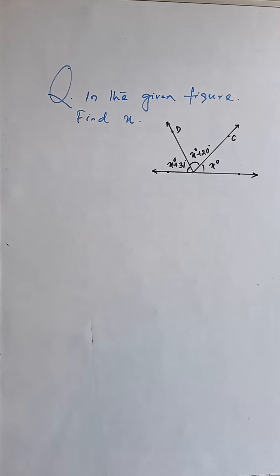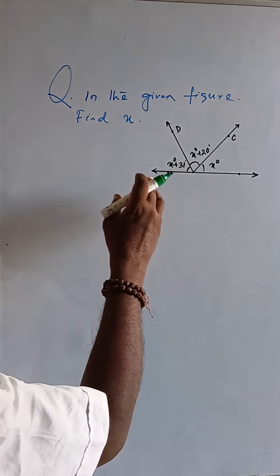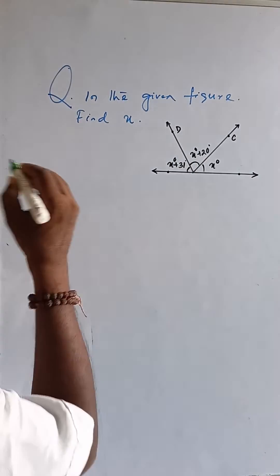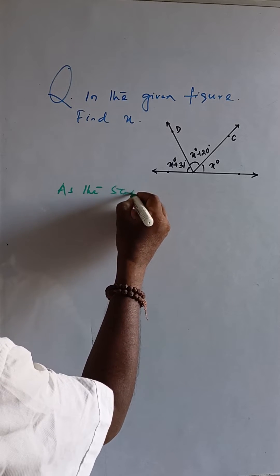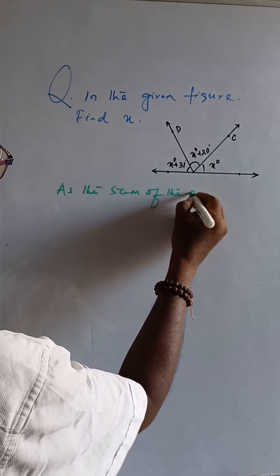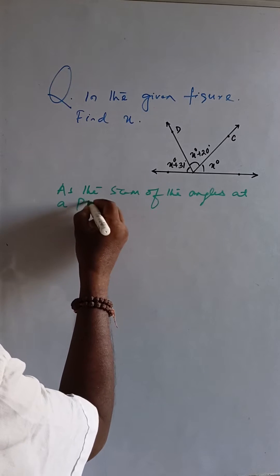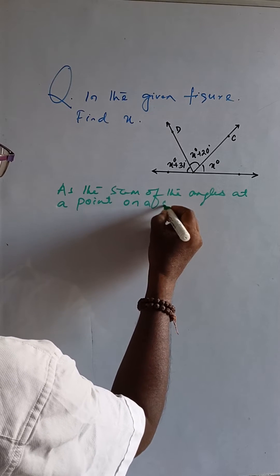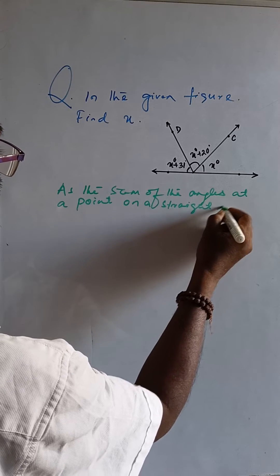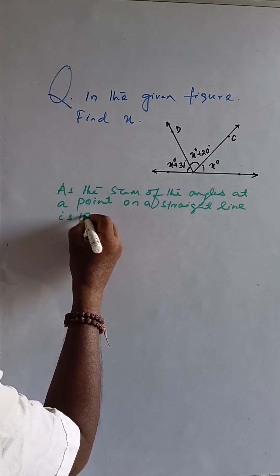In the given figure, find x. As the sum of the angles at a point on a straight line is equal to 180 degrees.